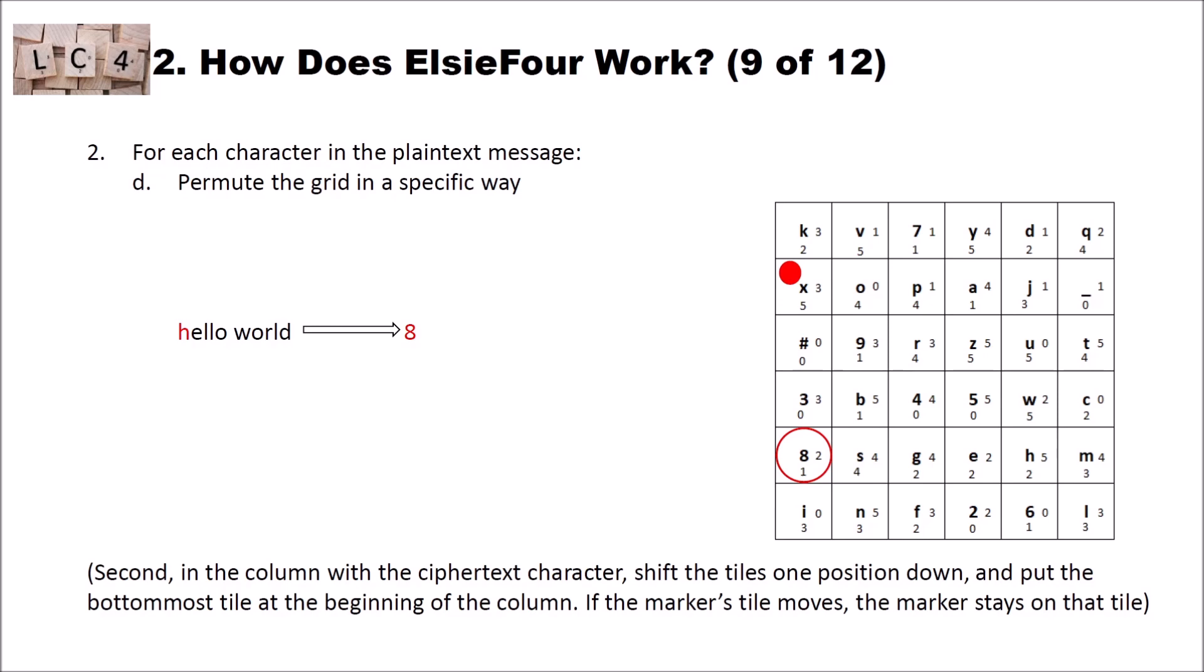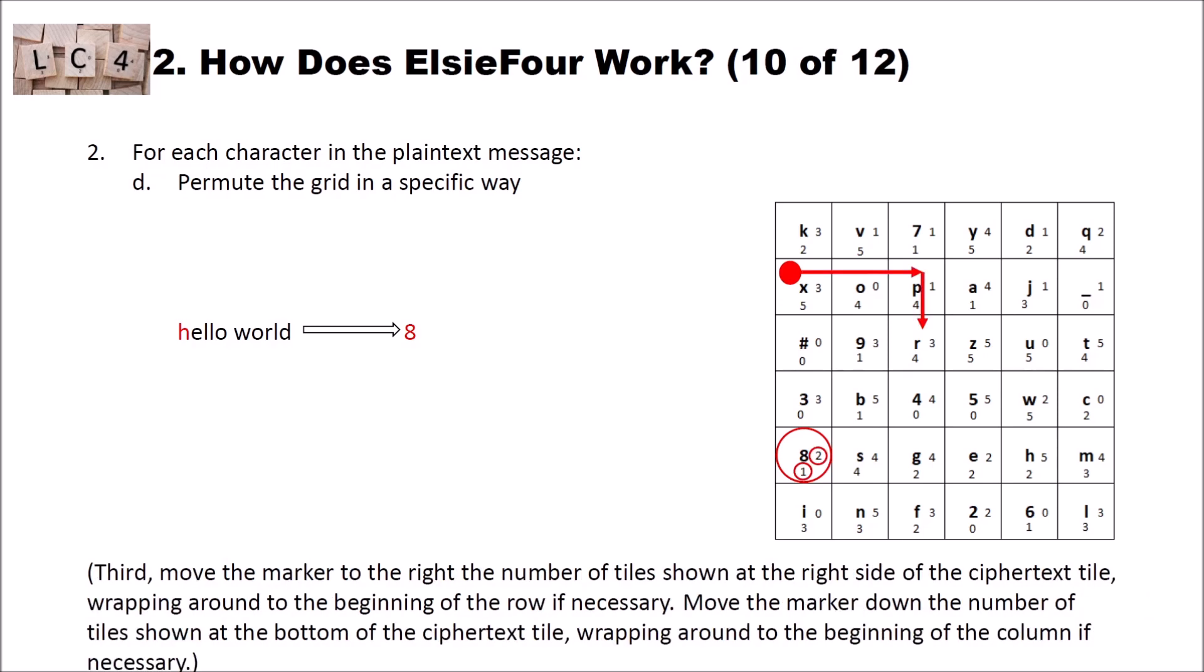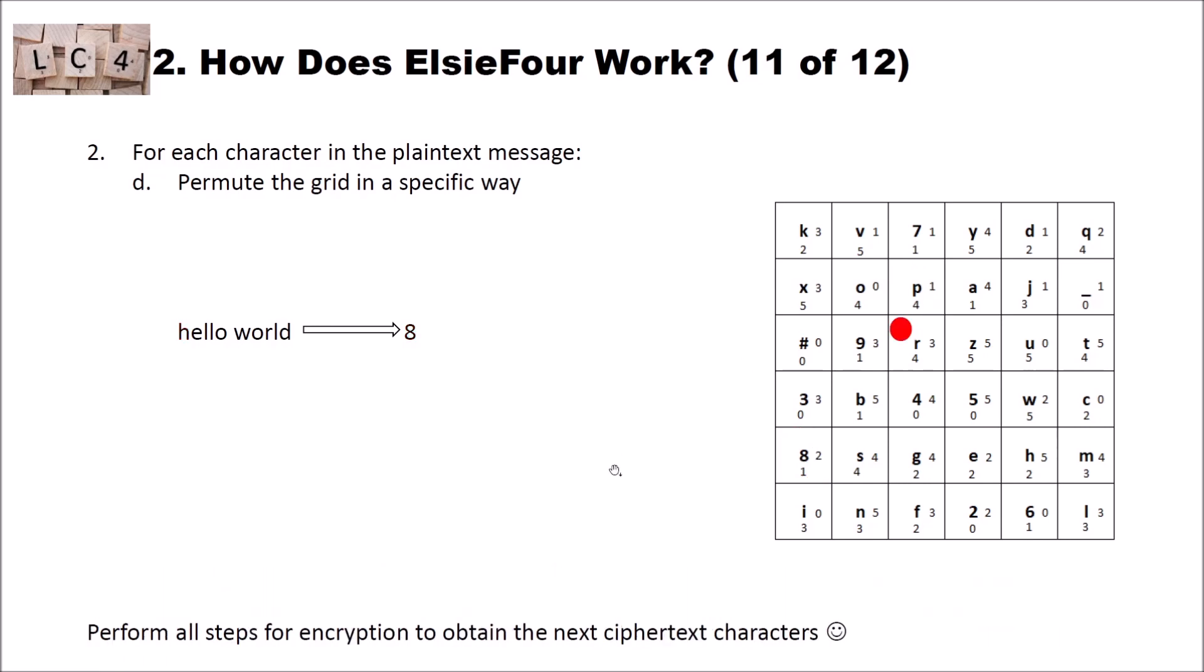And now, in the last step, we have to move the marker. Third, move the marker to the right, the number of tiles shown at the right side of the ciphertext tile, wrapping around to the beginning of the row if necessary. And move the marker down the number of tiles shown at the bottom of the ciphertext tile, wrapping around to the beginning of the column if necessary. Our ciphertext character, as we can see here, still is 8. And we have the small 1 at the bottom and the small 2 at the right side. So we have to go one, two steps to the right and one step to the bottom. So we move the marker to the new position.